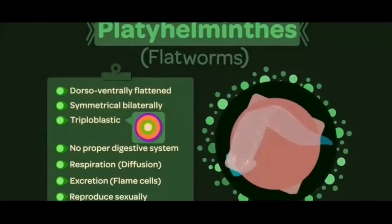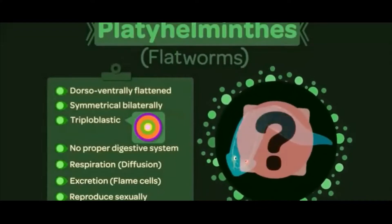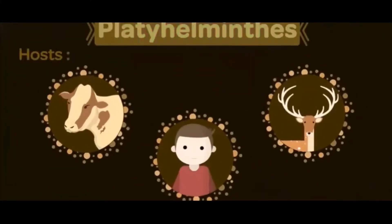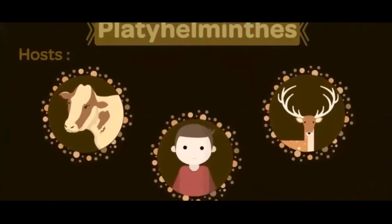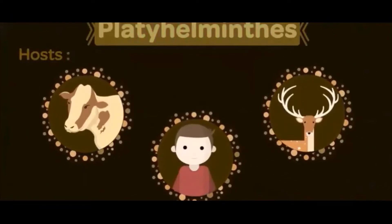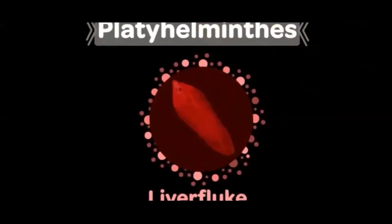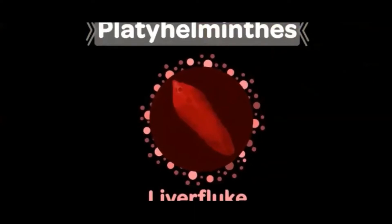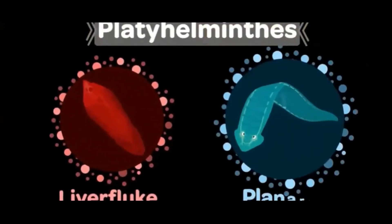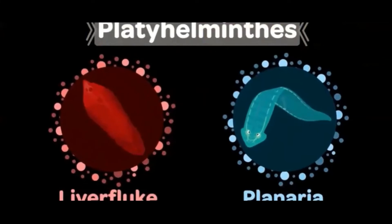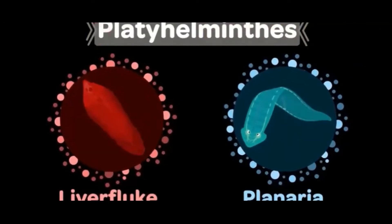Most of them are parasitic, found in the body of the target host. An example of this type includes the liver fluke. Some are free-living and found mostly in marine or freshwater habitats, with Planaria being the most common example.